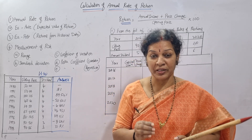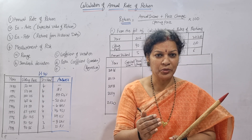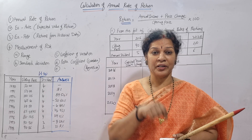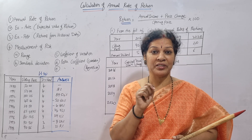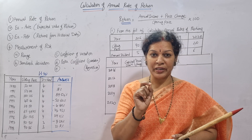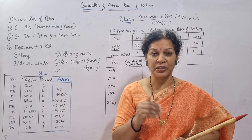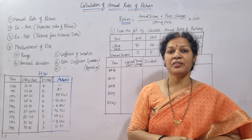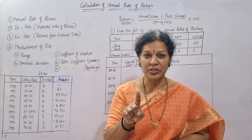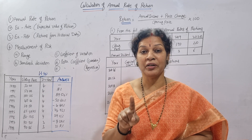We'll focus first on annual rate of return — annually, how much rate of return you are expecting. If we know these calculations, we can determine whether it is good to invest or not. For this, we need to know the price value and also the dividend. Return can come in two ways: as interest or dividend.